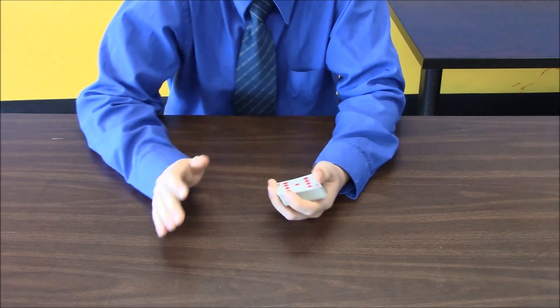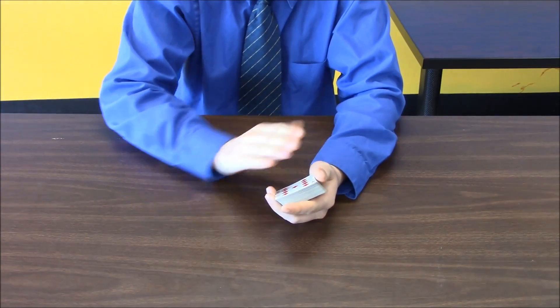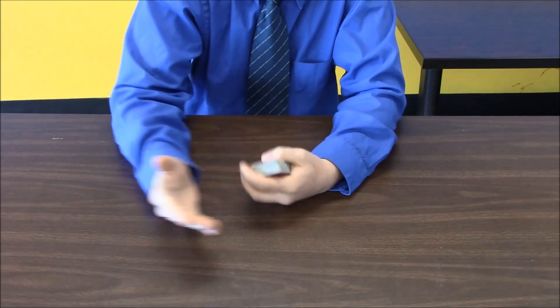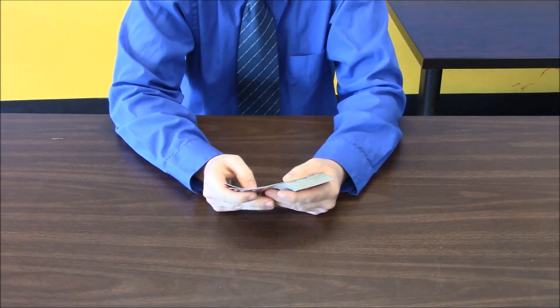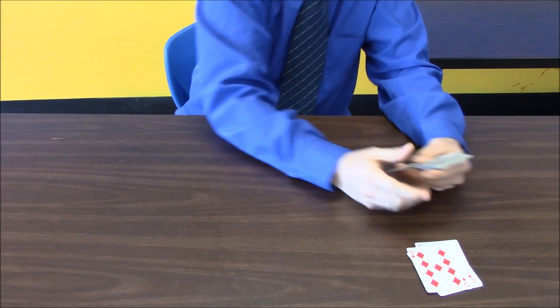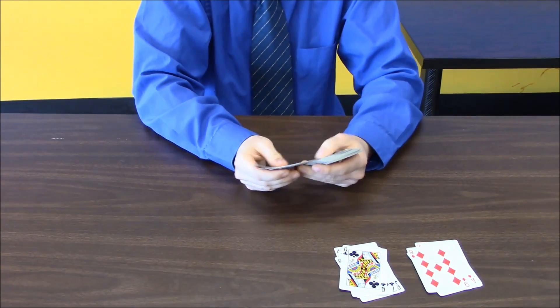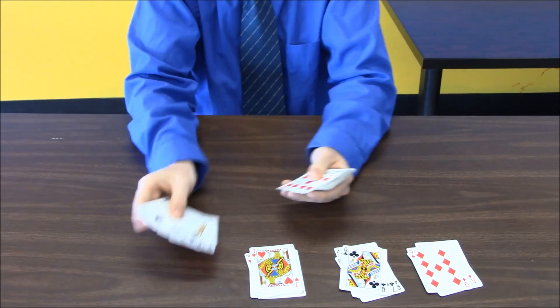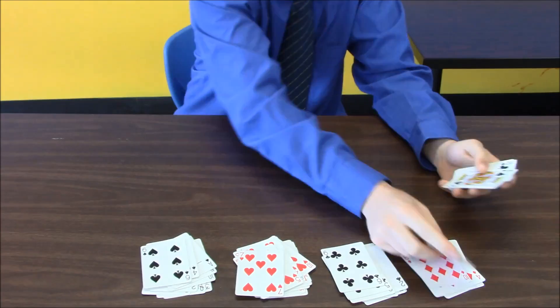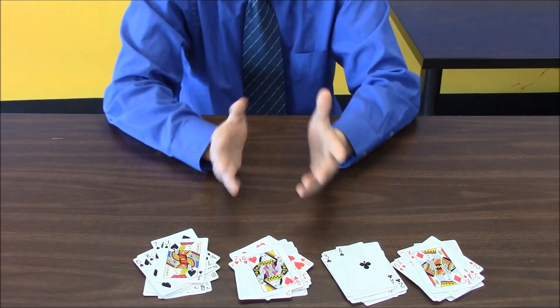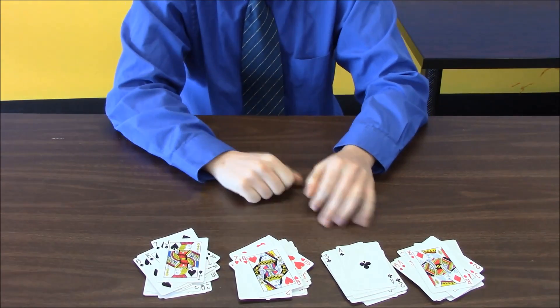So to perform this trick, the first step is to separate the cards by suit. So you have spades, hearts, clubs, and diamonds. So I will do that now. Okay, so now that I've separated them out,